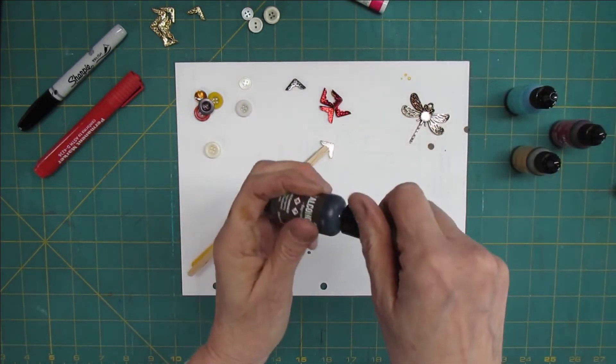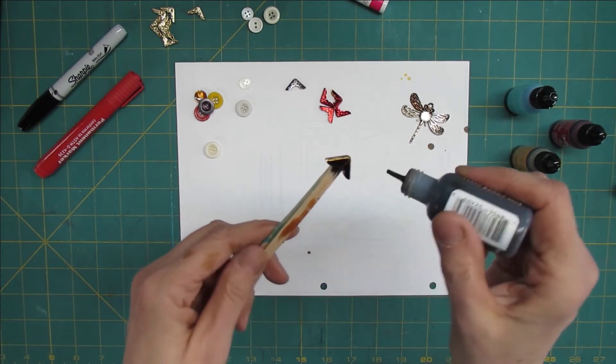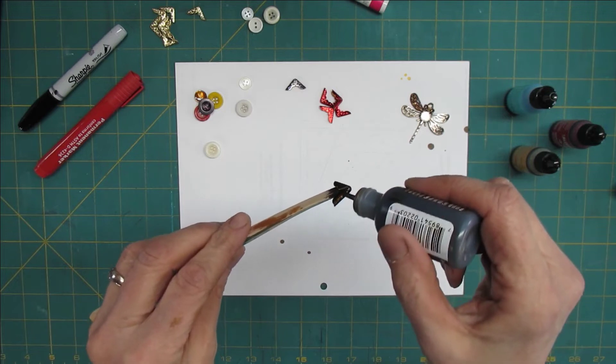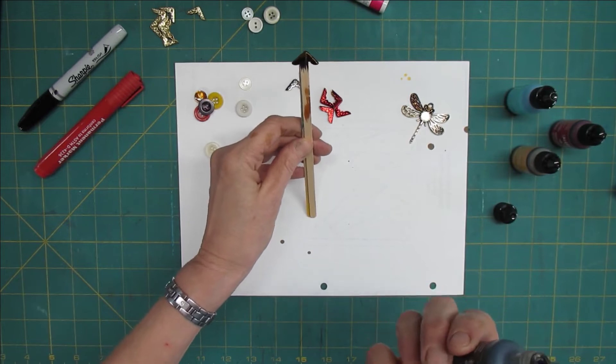Then I'll show you the alcohol ink. You just drip some ink on there. This goes a lot quicker, but you also use a lot more ink. And again, I will just have this upright in a cup.